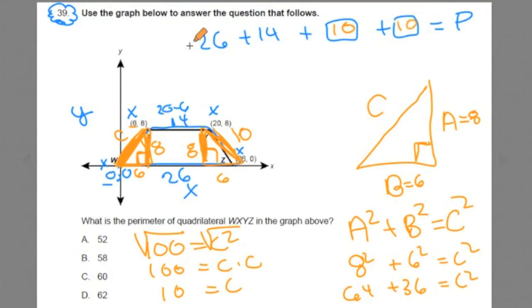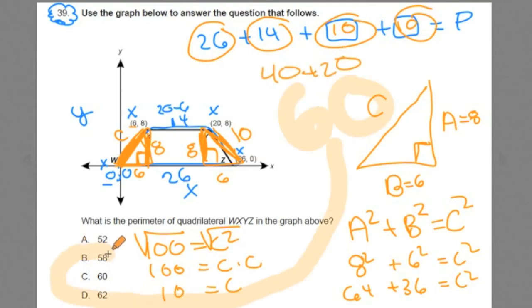And then we can go back to geometry where we're adding up the measure of the sides. So we're going to do 26 plus 14 plus 10 plus 10 to get the perimeter. 26 plus 14 is 40, 10 plus 10 is 20, 40 plus 20 is 60. The perimeter is C.